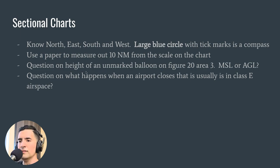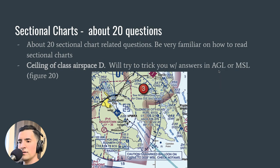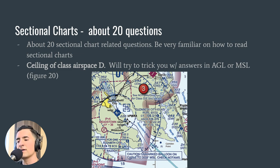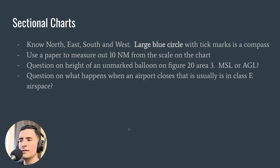There's a question on the height of an unmarked balloon on figure 20, area 3. Going back to figure 20 — they'll give you the general location, such as southeast of Elizabeth City Regional. There's a caution box that reads: 'Caution, unmarked balloon on cable to 3,008 MSL.' That's the answer: 3,008 MSL. Answer choices included 3,008 AGL and 3,008 MSL, so be aware of the AGL vs. MSL distinction.